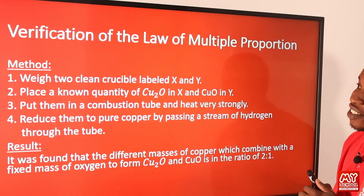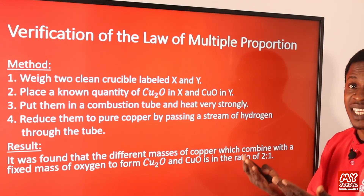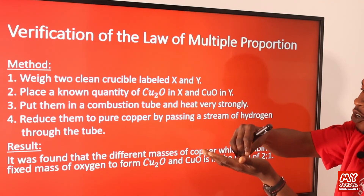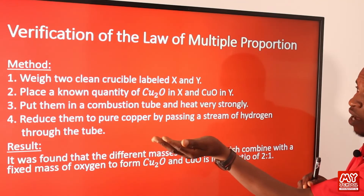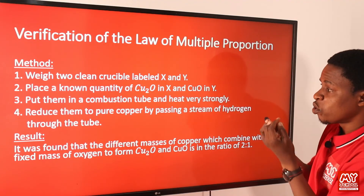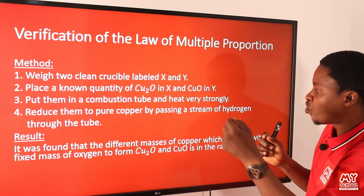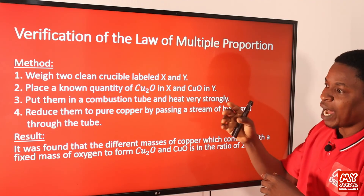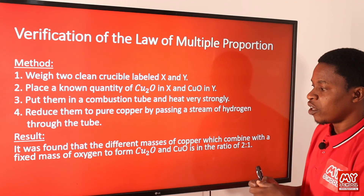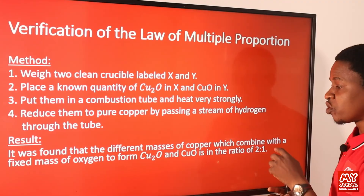To verify the law of multiple proportion in the laboratory: weigh clean crucibles labeled X and Y. Place a known quantity of copper(I) oxide (Cu2O) in crucible X and copper(II) oxide (CuO) in crucible Y. Put them in a combustion tube and heat strongly, reducing them to pure copper by passing a stream of hydrogen through the tube. The result shows different masses of copper combining with a fixed mass of oxygen to form copper(II) oxide and copper(I) oxide in the ratio of 2:1, verifying the law.